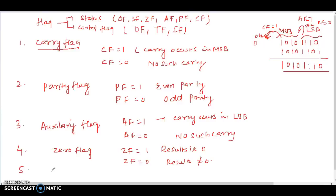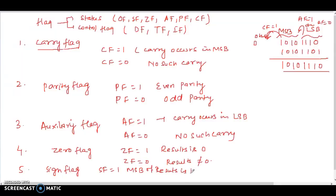The fifth flag is the sign flag. SF is equal to 1 if the MSB of the result is 1. The sign flag is equal to 0 if the MSB of the result is 0.